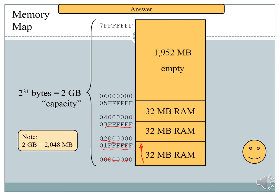The next address starts one more than the previous ending address. You add 0x1FFFFF, then start again at that point and add another block similarly. Continue like that to get all your values for the memory map.